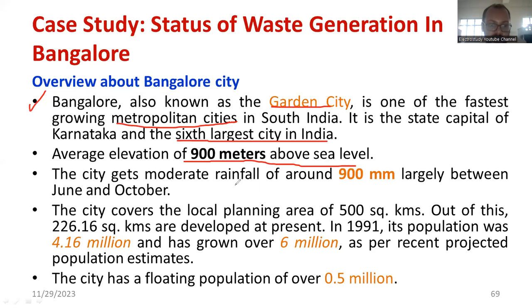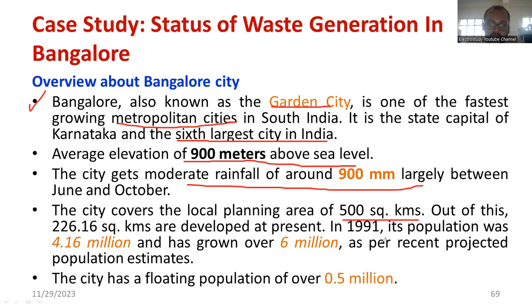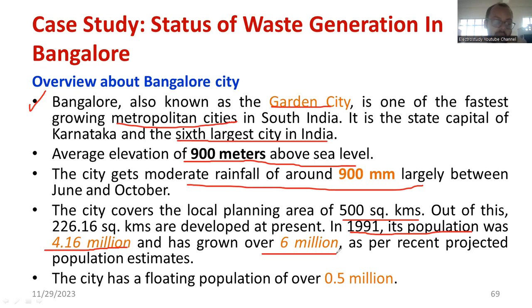The average elevation is 900 meters above sea level, and the city has moderate average rainfall of around 900 millimeters. The local planning area is about 500 square kilometers. The population in 1991 was around 4.16 million, but it has now grown to 6 million. More people are coming to Bangalore for its weather and opportunities. The city also has a floating population of over 0.5 million people temporarily visiting for work.